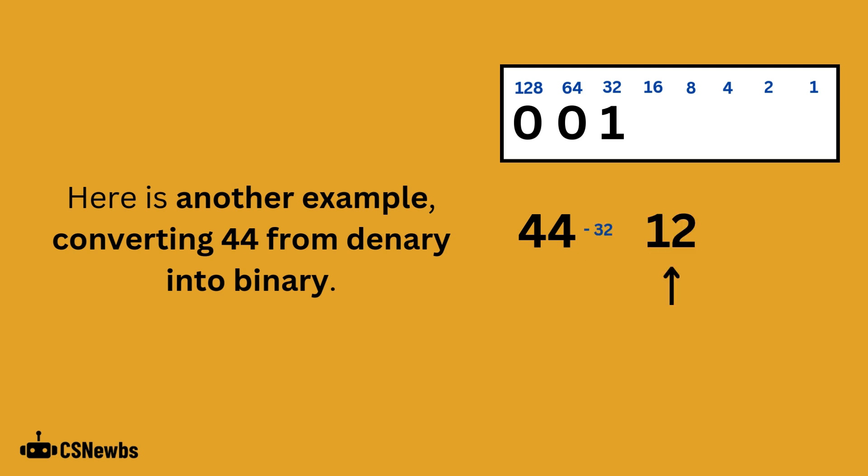32 does fit into 44, so we add a 1 beneath the 32 place value and subtract 32 from 44, giving us 12. 16 does not fit inside of 12, so we put a 0 beneath the 16 place value.